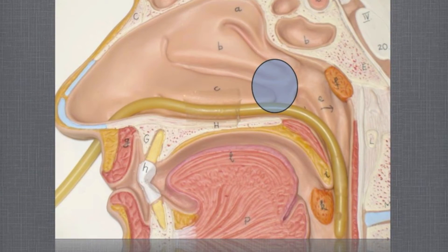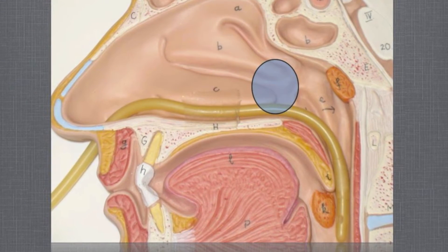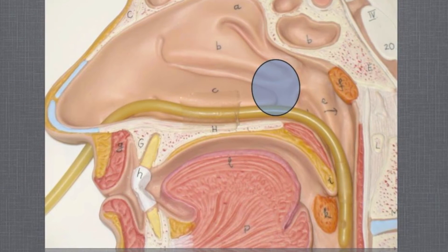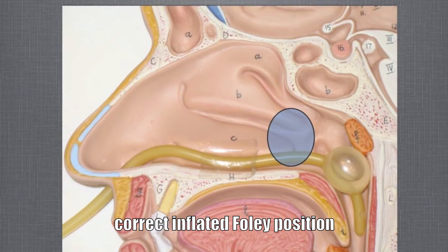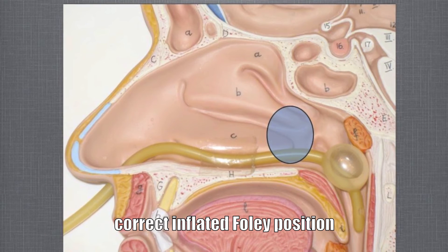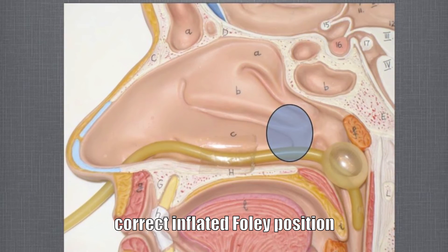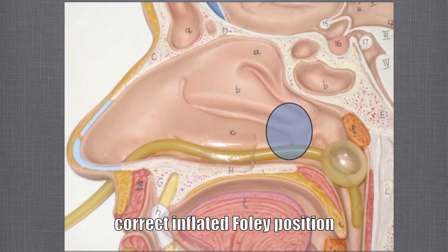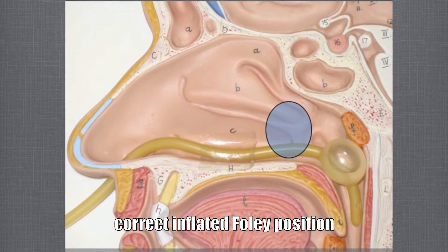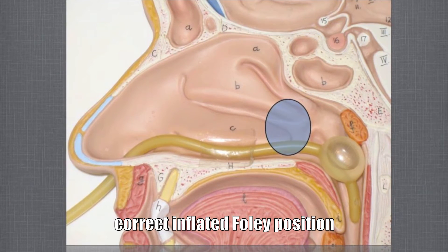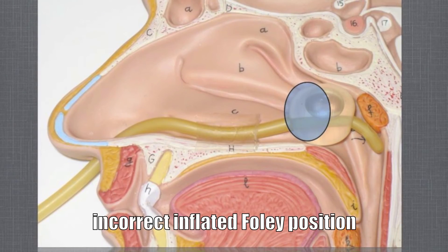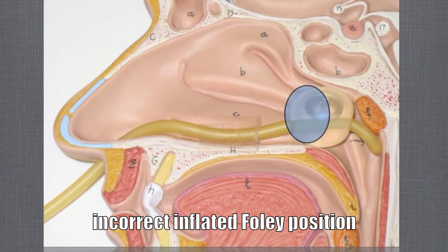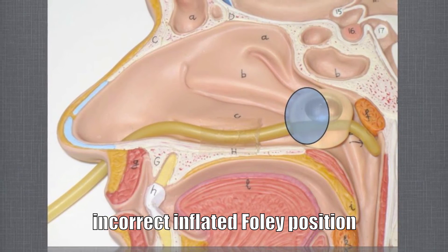Insert the Foley catheter along the floor of the nose as you would for a nasogastric tube. When it's in the oropharynx, you've gone far enough. At this point, withdraw the Foley catheter in a retrograde fashion while inflating the balloon with 5-6 cc of saline. The balloon needs to be placed in the nasopharynx posterior to the choana — it will direct blood out the front of the nose while not stopping the bleeding. If the bleeding has stopped once the Foley catheter is placed, you have advanced it too far and are covering the site of bleeding, so the catheter needs to be adjusted.